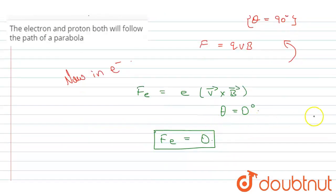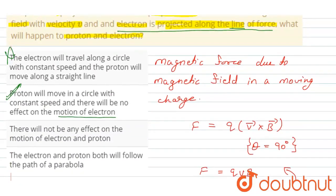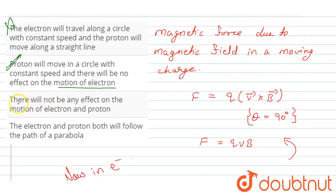And now when we talk about option third: there will be no effect on the motion of electron and proton. So here we find that there will be some effect on the motion of proton. So here this statement is also wrong.